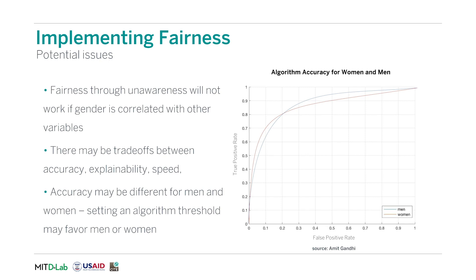Second, since your data shows a difference in default rates, you have to actively decide how to correct for that. In the case of loans, different approaches to implement fairness may have a trade-off with the accuracy of your algorithms. Third, the type of algorithm the implementer uses could have trade-offs as well. Some algorithms may be faster at the cost of accuracy. Others may be more accurate at the cost of explainability or understandability.